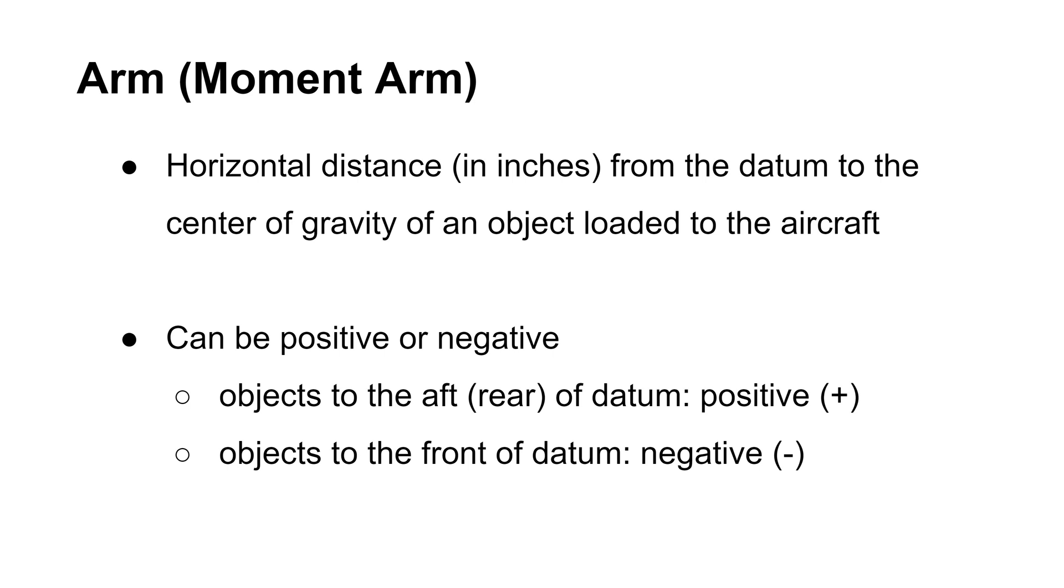Next is the notion of arm or moment arm. The arm is the horizontal distance from the datum to the center of gravity of an object loaded to the aircraft. The arm measurement is given in inches and it can be positive or negative.